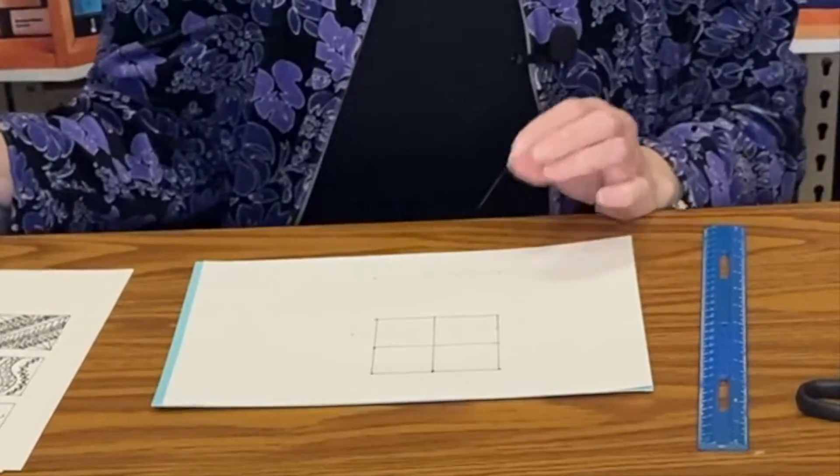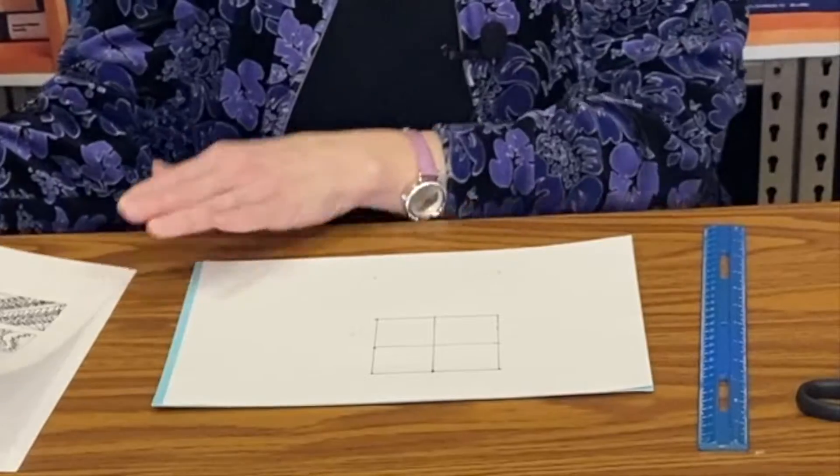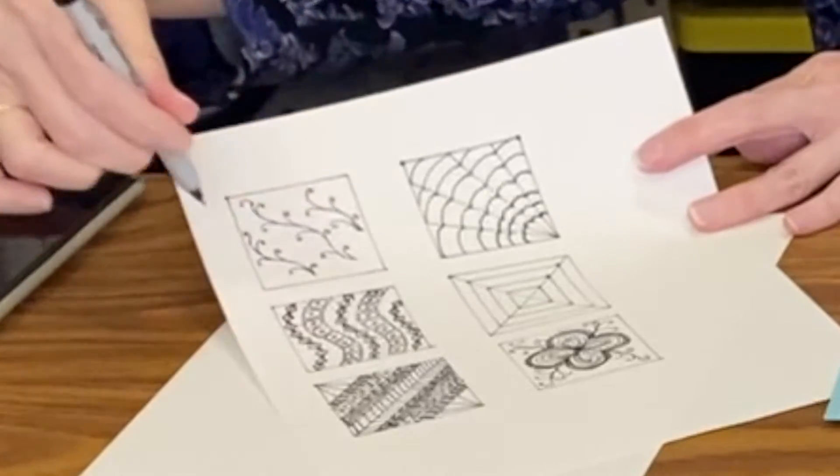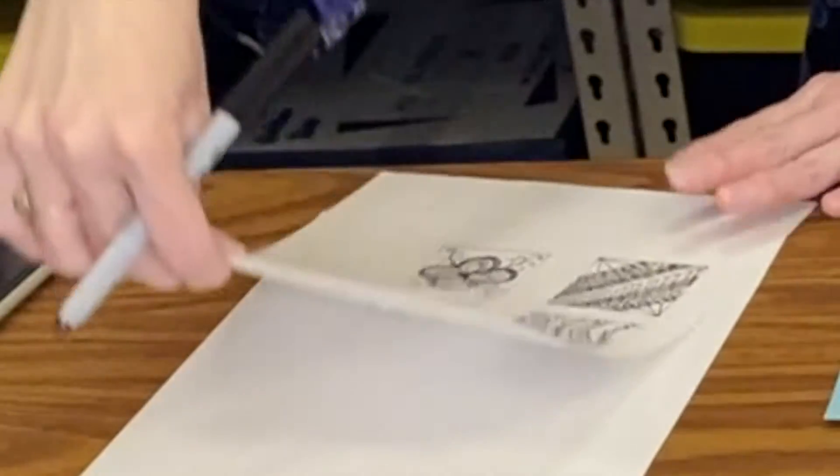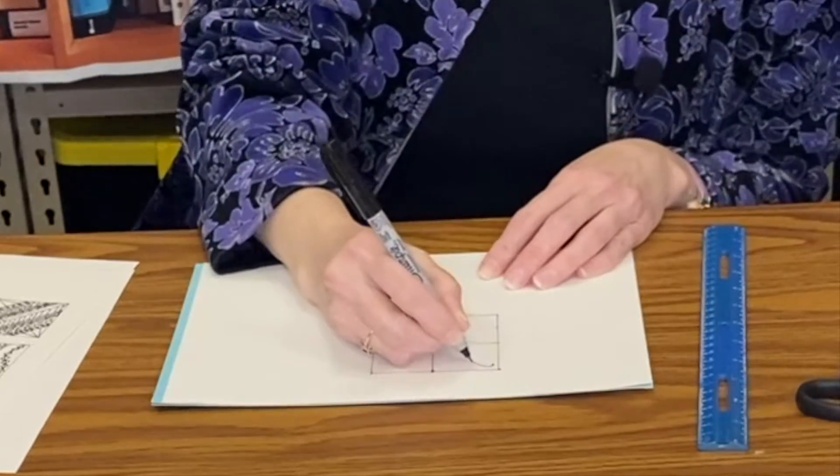The first one I'm going to show you is a very simple one if you want to add a little bit of flair to your creations, and that's going to be these little curly stems. And so we're just going to make sort of an S shape.